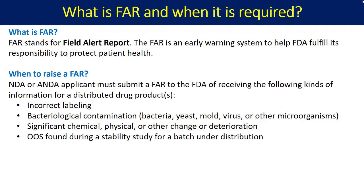An OOS — out of specification — result found during a stability study for a batch under distribution also triggers a FAR. For example, you have an annual stability batch already distributed in the market, and at the 12-month time interval you find an increase in degradation products beyond the specification limit. The product is now out of spec at 12 months but the batch is already in the market — in that case the company has to raise a FAR.